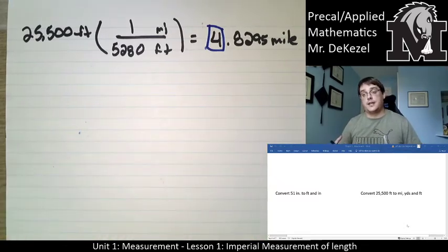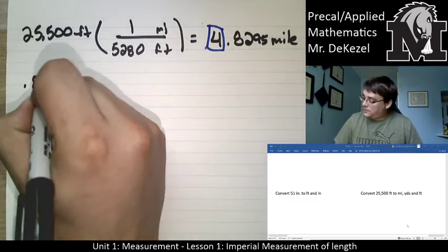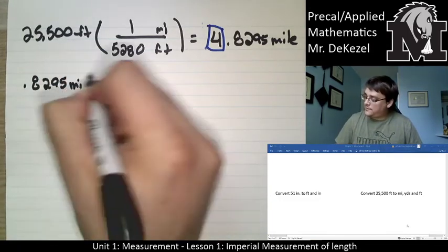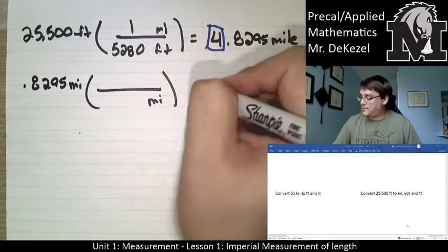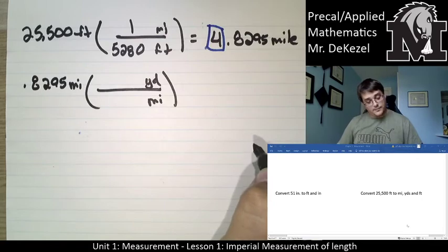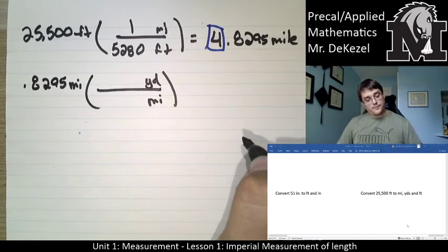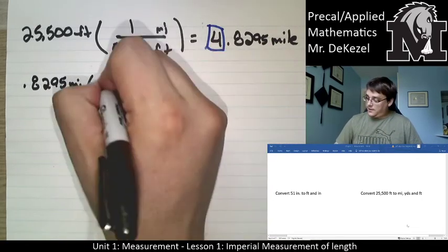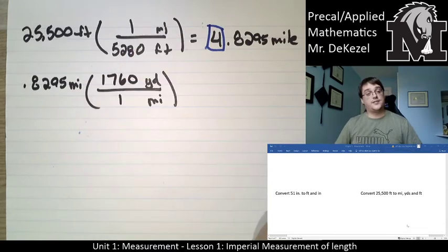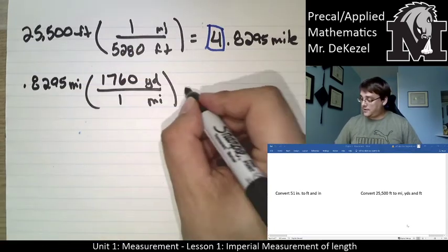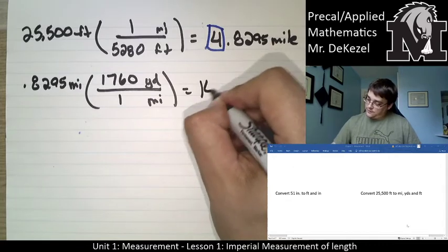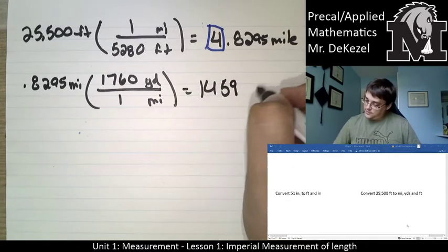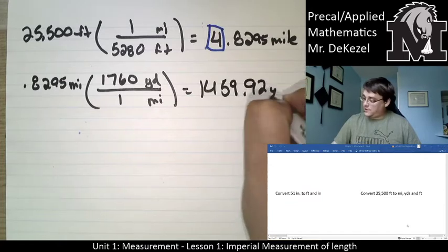Let's go down to the next smallest unit: yards. We take 0.8295 miles and convert that to yards. Miles goes on the bottom, yards goes on the top. From page two, one mile is 1,760 yards. We multiply those together, the units cancel out, and we end up with 1,459 yards — 1,459.92 yards, I should say.